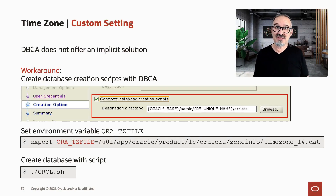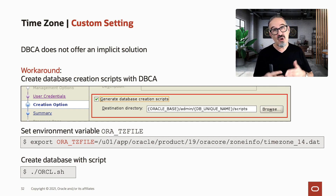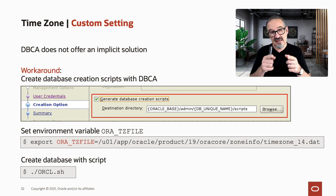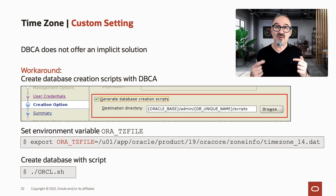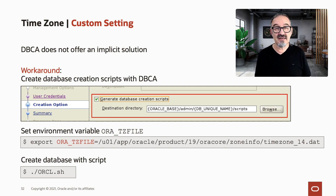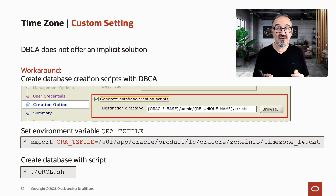We can still use DBCA, but only to give us the scripts to create our database, because we need to set an environment variable. In DBCA, we create the database creation scripts and ask DBCA to give these to us. Then in our environment, we need to set ORA_TZFILE, and this environment variable needs to point to the time zone file in ORA core zone info that you would like to have your database created with.